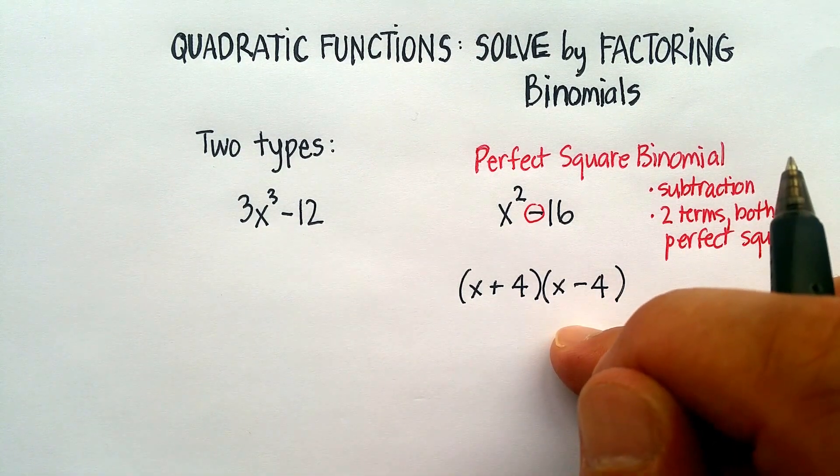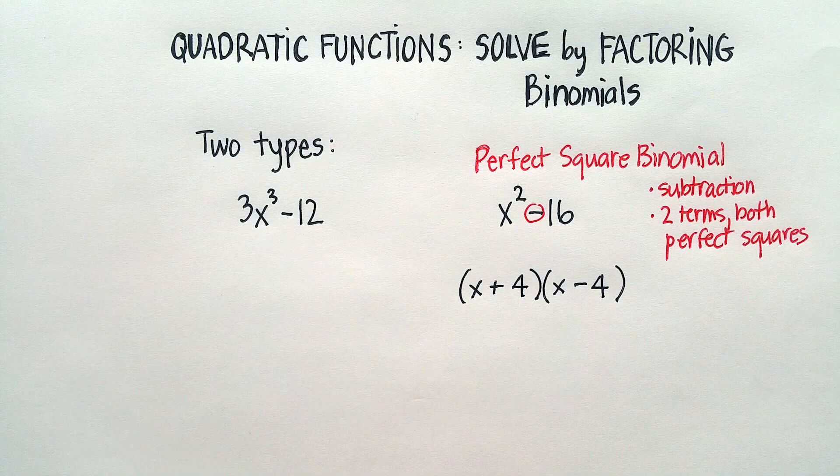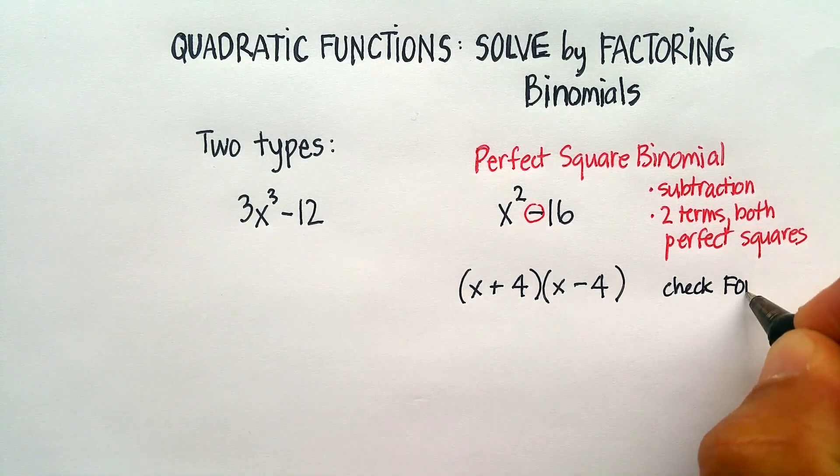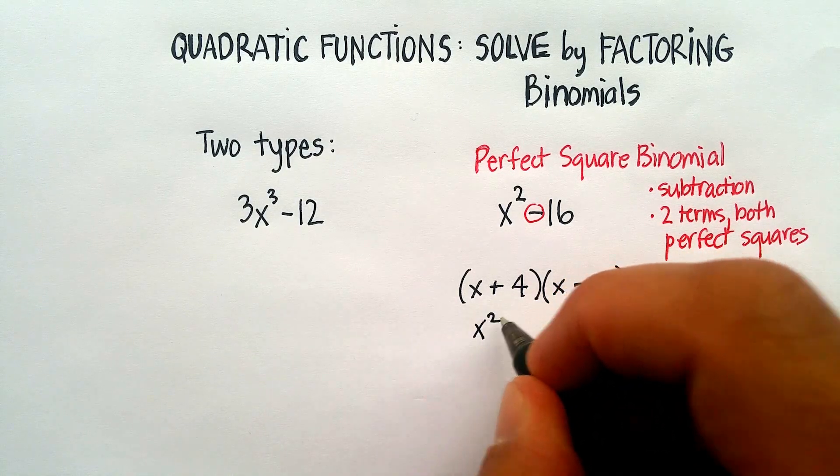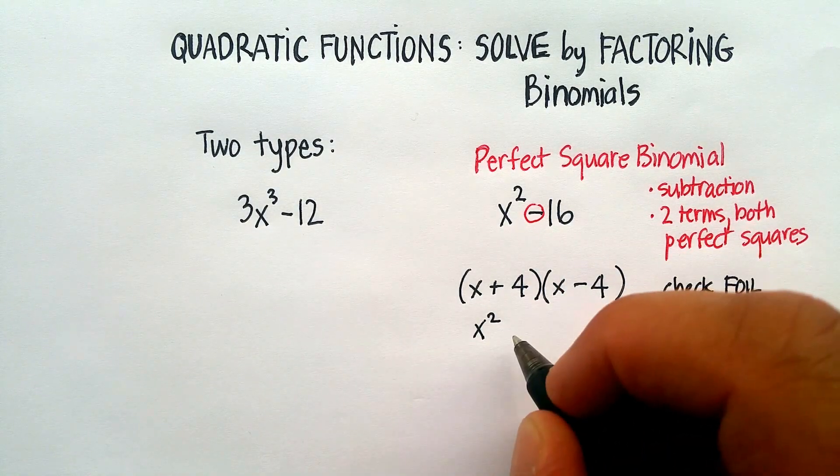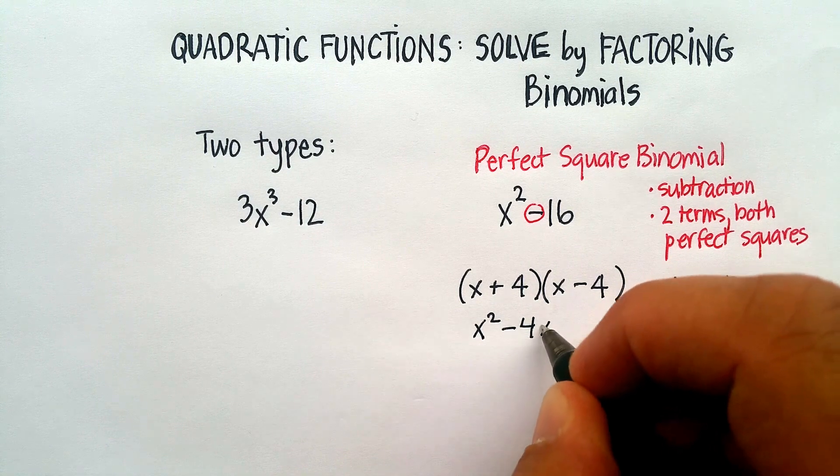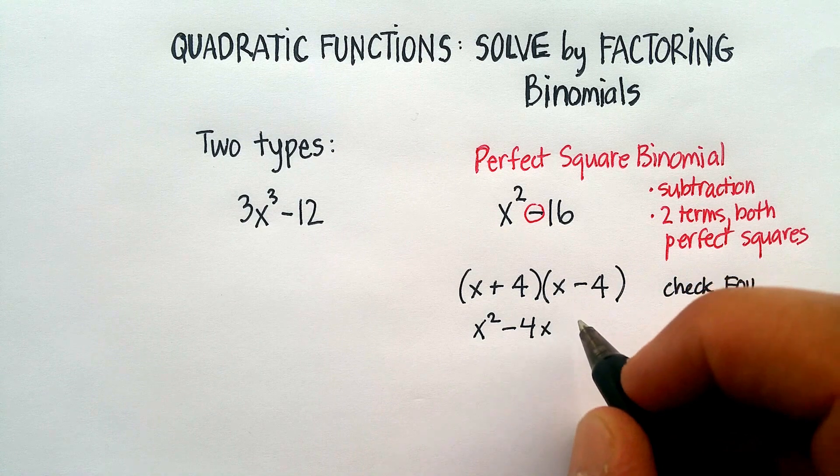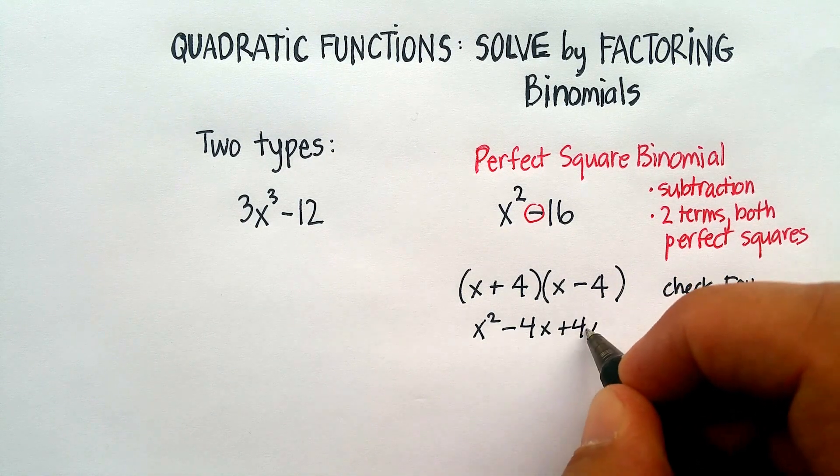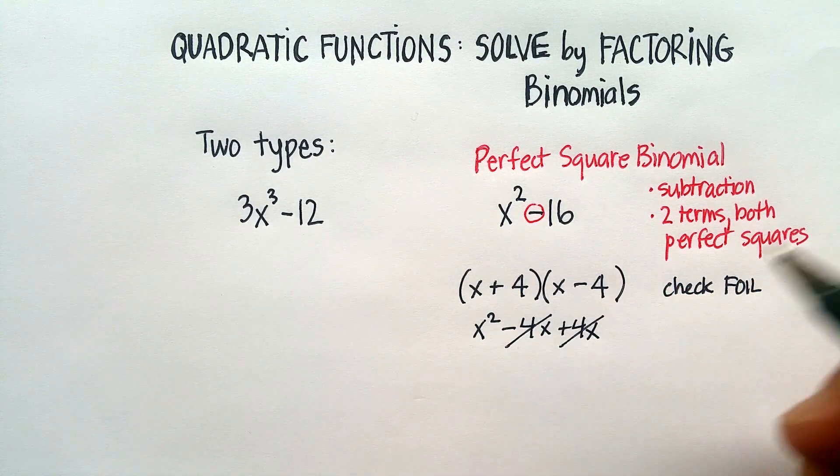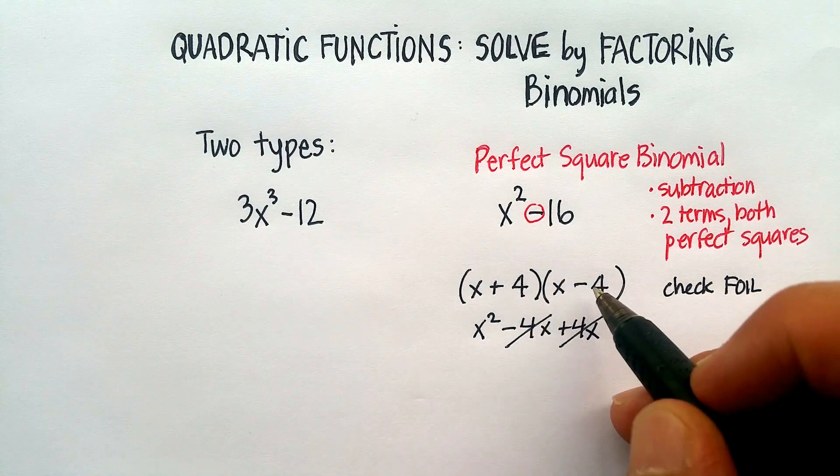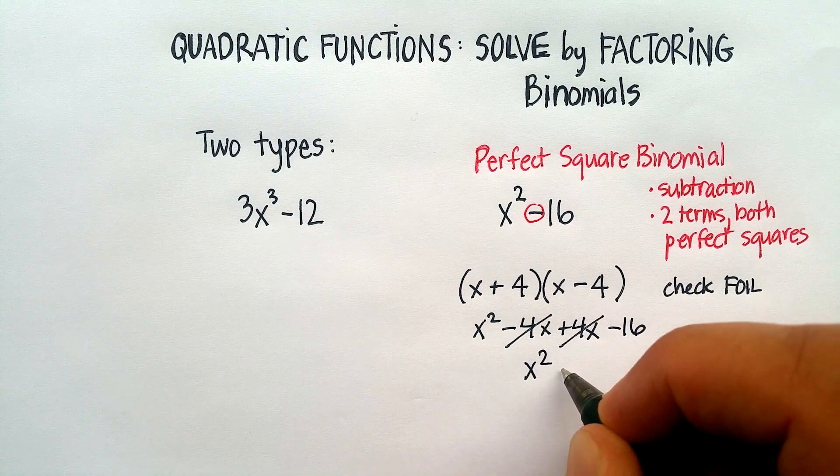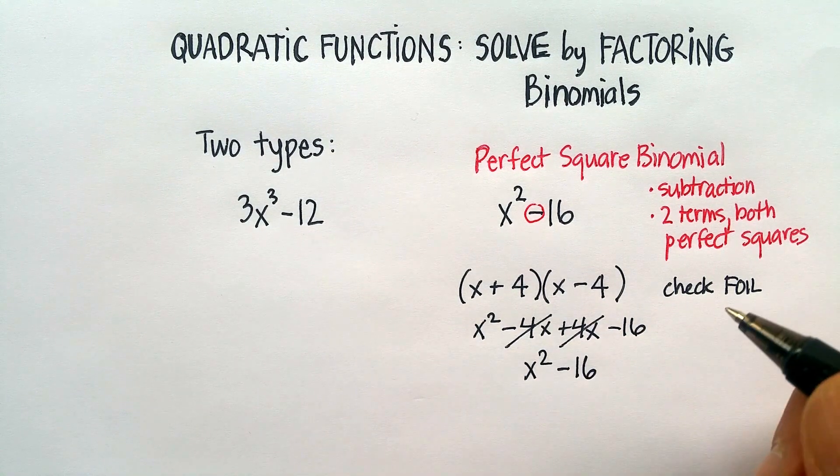Now let's check this just to make sure that we did it correctly. So let's just do a quick check and we'll check it by doing a FOIL. x times x is x², x times -4 is -4x, 4 times x is +4x, and we'll see immediately these cancel, and then 4 times -4 is -16.